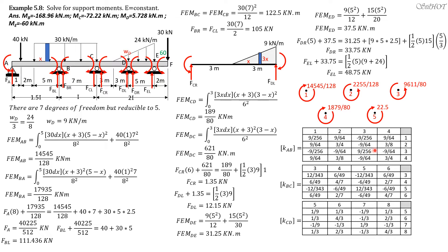Row 2 has columns 2 and 4 interchanged. For member BC, EI equals 1, so 12EI/L³ with length 7 — we copy the stiffness matrix entries using length 7. For member CD, EI equals 2.